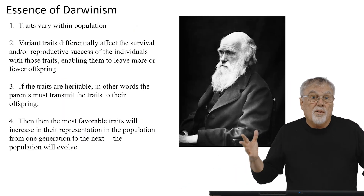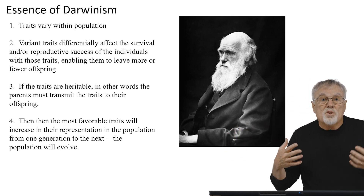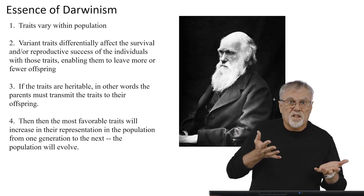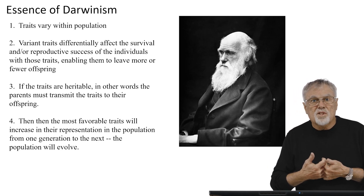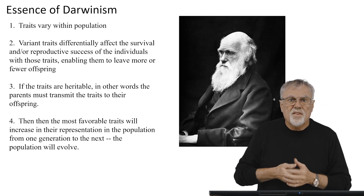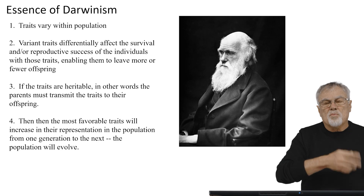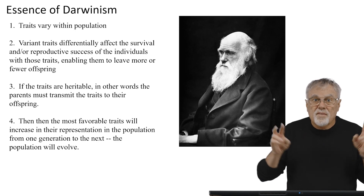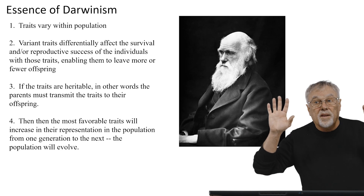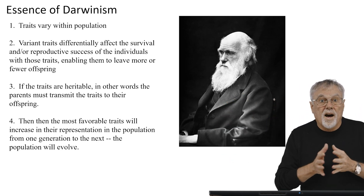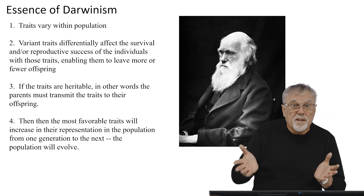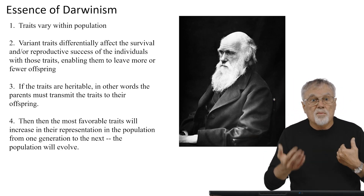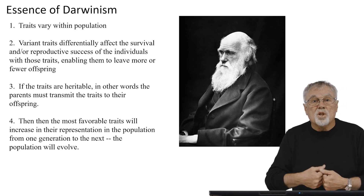For Darwin, the problem comes from what I call the essence of Darwinism. The essence of Darwinism is, number one, traits vary within populations. Those variant traits are differentially expressed and differentially affect the survival and reproductive success of the individuals that have those traits. This enables those with favorable traits to leave more offspring, and those with less desirable traits to leave fewer offspring. Then, if the traits are heritable — meaning offspring are similar to parents — the parents will transmit those traits, and the most favorable traits will increase in the population from one generation to the next. In other words, the population will evolve.